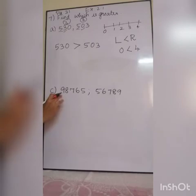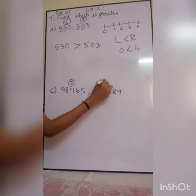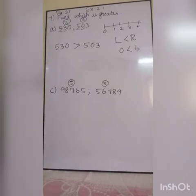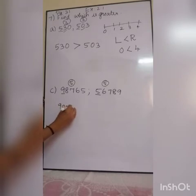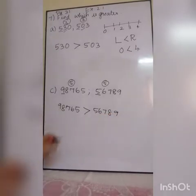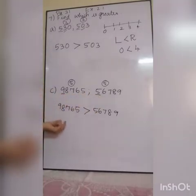The B part of the question is your homework. Now, both numbers have 5 digits, so we can't compare by digit count. Starting from the left side: 9 versus 5. 9 is greater, so obviously 98,765 is greater than 56,789. Understood how I am finding the greatest? I start from the left side — 9 is greater than 5, so that number is greater. The D question is your homework.